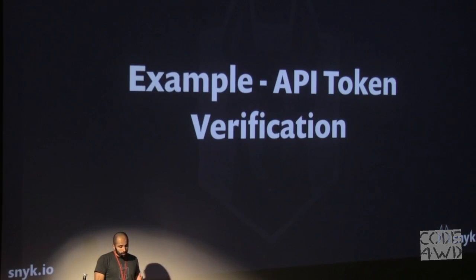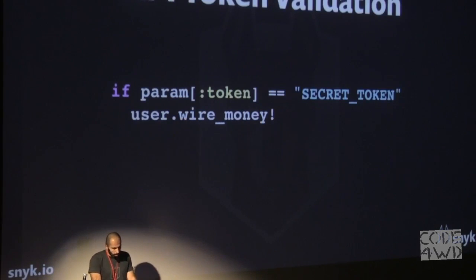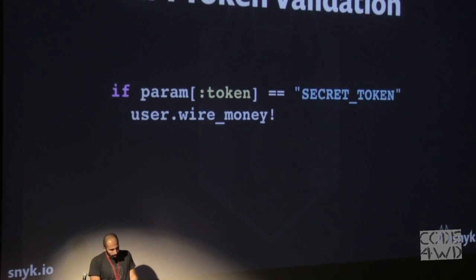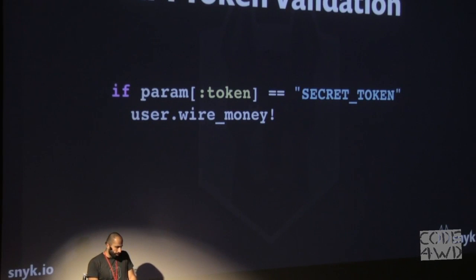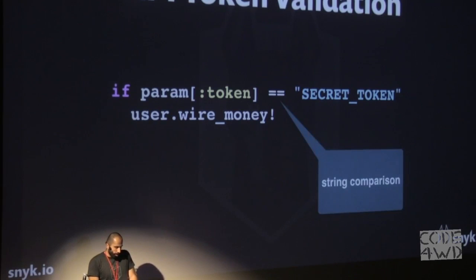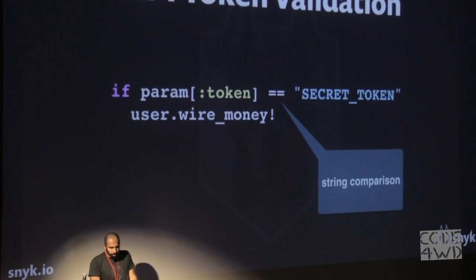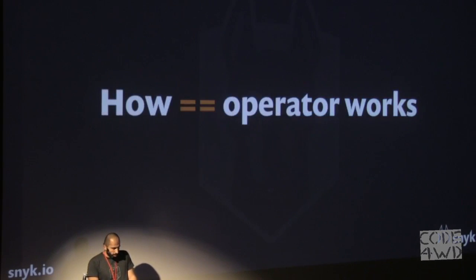This time we will actually try to gain access and get the token. Here is a simple code: we take the token sent by the user and compare it to the secret token stored on the server. To do it we are using Ruby's equals-equals operator, which does a simple string comparison. So how does the equals-equals operator work?